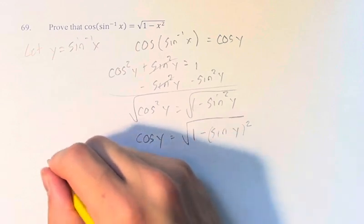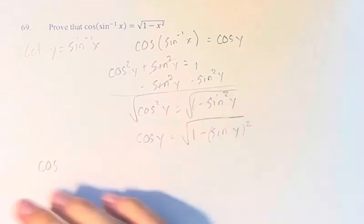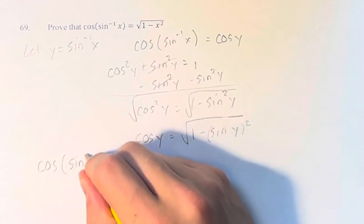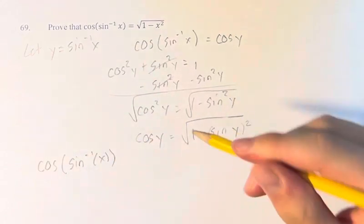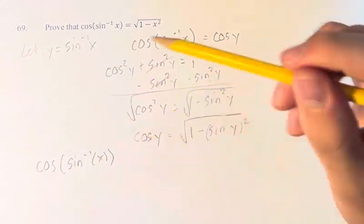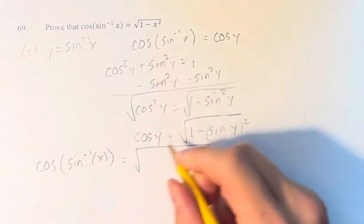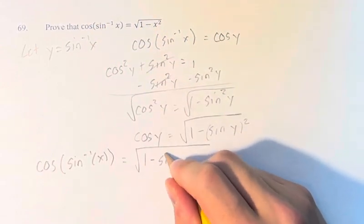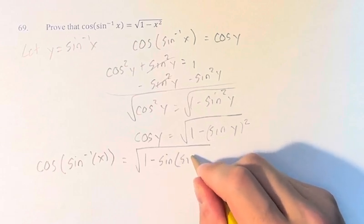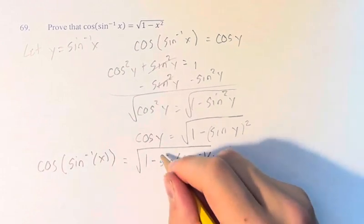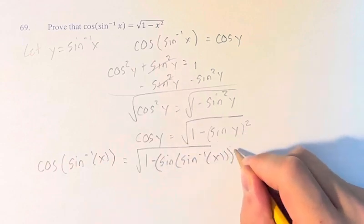Cosine of y, where y is sine inverse of x. So we've solved for cosine y, which is equal to the thing that we're trying to solve for, is equal to the square root of 1 minus sine of y, where sine of y is sine inverse of x, and this whole thing is squared.